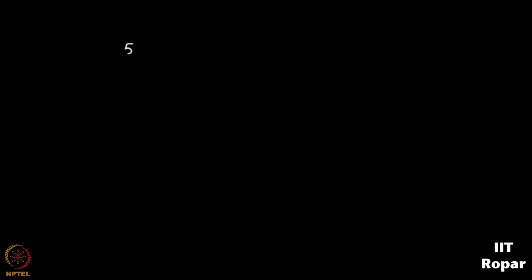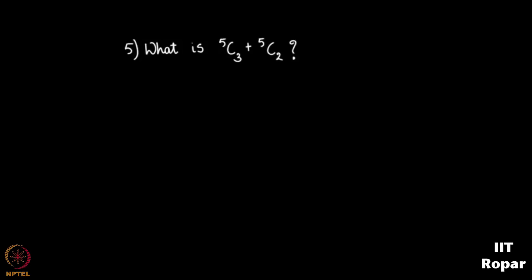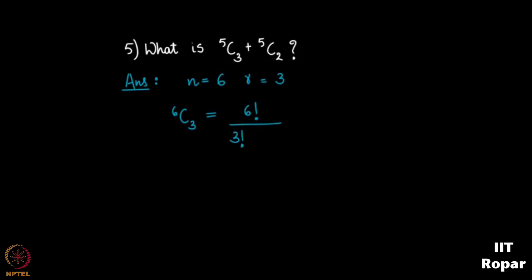What is 5 choose 3 plus 5 choose 2? Applying the same formula, N is 6 and R is 3, so we calculate 6 choose 3. This equals 6 factorial by 3 factorial into 3 factorial, and after computation we get 20.